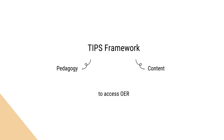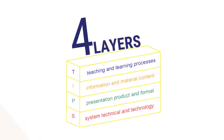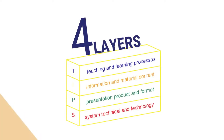Version 2 is the latest version of TIPS, which specifies 39 criteria divided into 4 sections, as you can see in the figure given here: teaching and learning process, information and material content, presentation, product and format, and system, technical and technology. TIPS is a flexible OER tool to assess the OER in its own context.